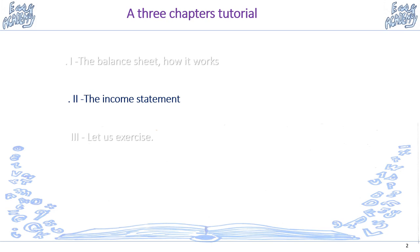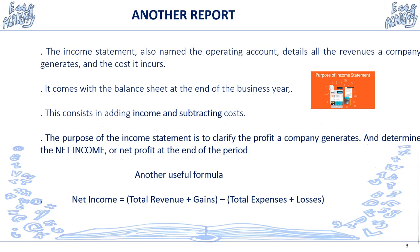The income statement is also named the operating account. It details all the revenue a company generates and all the costs it incurs. It comes with the balance sheet at the end of the business year. It consists of adding income and subtracting costs. The purpose of the income statement is to clarify the profit a company generates and determine the net income or net profit at the end of the year.